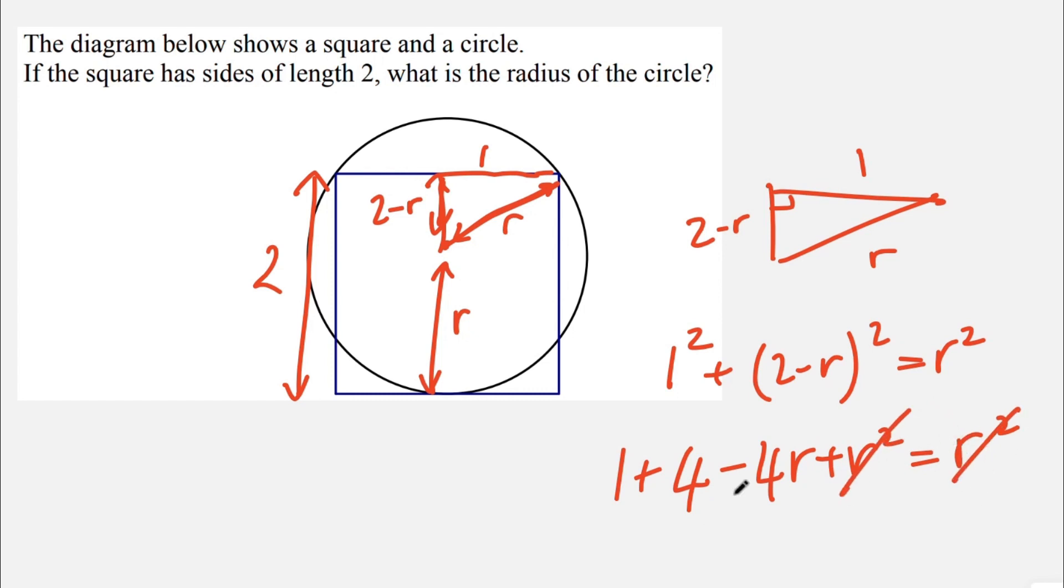I can cancel the R squared and bring the 4R onto the other side. So I get 4R equals 5, and so R is 5 over 4. And that is our solution. The radius of this circle is 5 over 4.